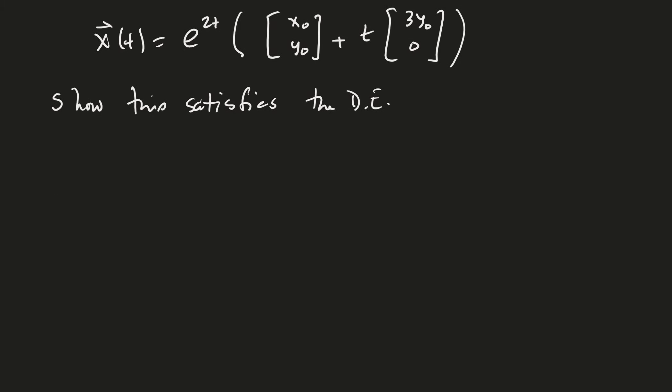So let's see, x is equal to x0 e to the 2t plus 3t y0 e to the 2t and then y is equal to just y0 e to the 2t. Good.